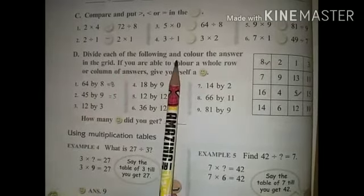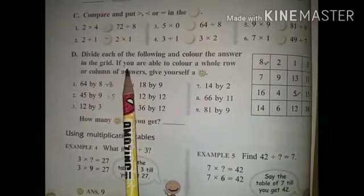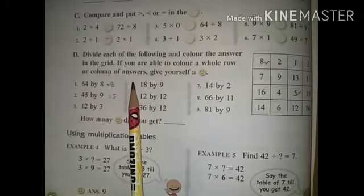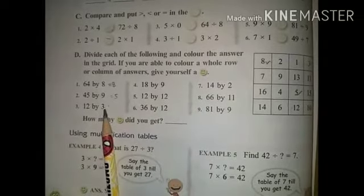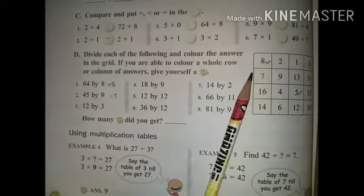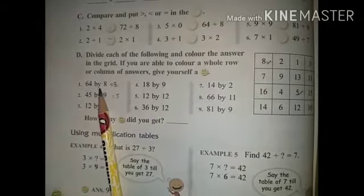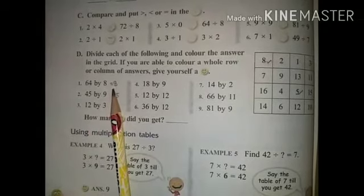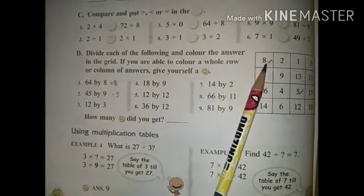Point D: divide each of the following and color the answer in the grid. If you are able to color a whole row or column of answers, give yourself a smiley face. Here are the questions and answers to tally and color. First question: 64 divided by 8 — answer is 8. Color that box.